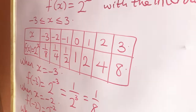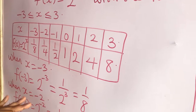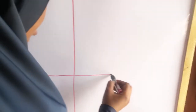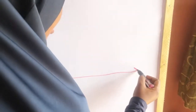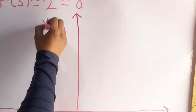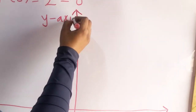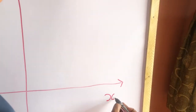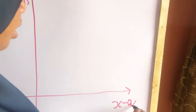The next thing is that we have to draw the graph — we have to sketch the graph. Here is the y-axis, which is the vertical axis, and here is the x-axis, which is the horizontal axis.